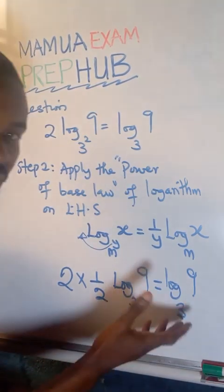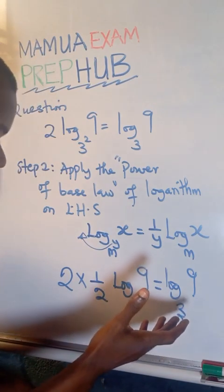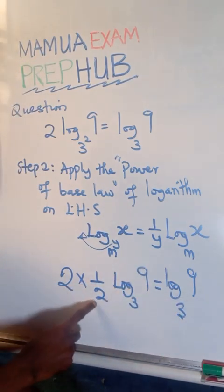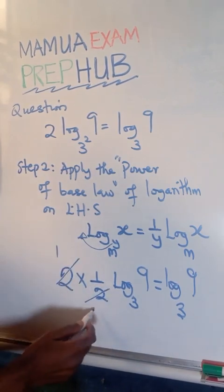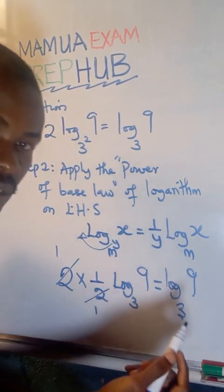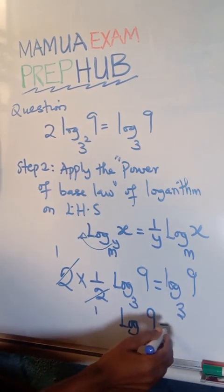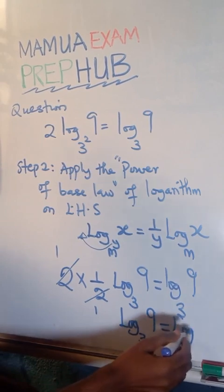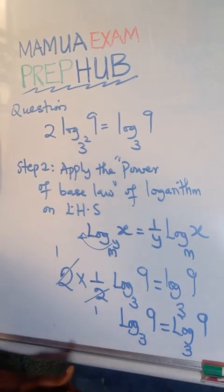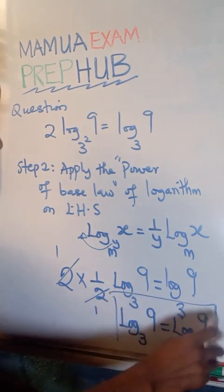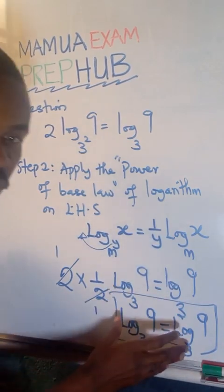So after this step, we are simply going to see that we can solve this fraction of which 2 can cancel down 2. So what is left is log 9 base 3 equals to log 9 base 3. So this shows that we have been able to prove the equation.